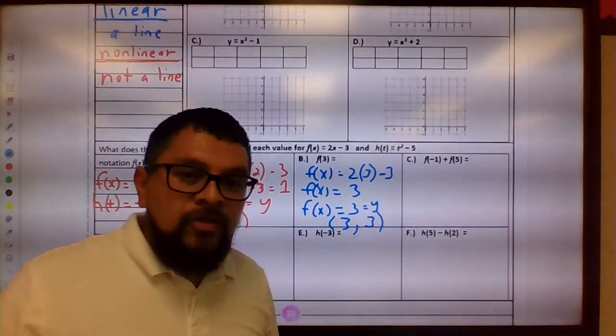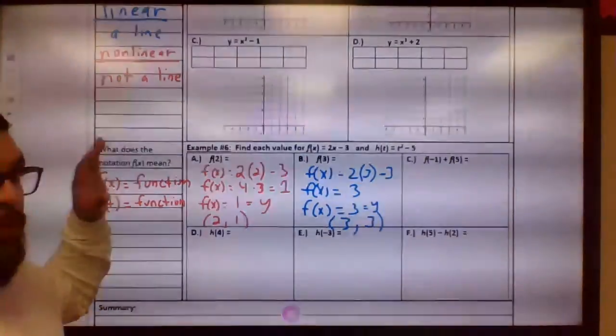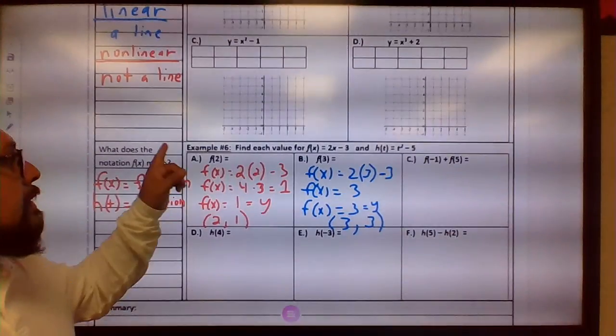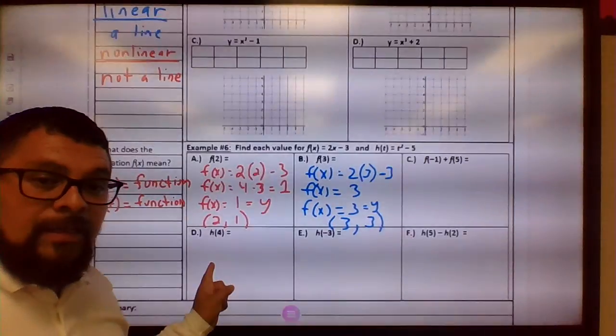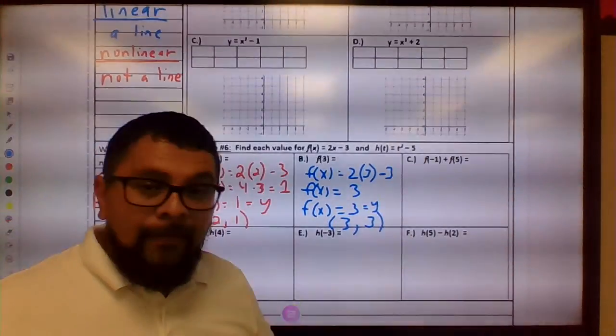Hi class, this is Mr. G, so we're continuing on and finishing 1.7. We are in example 6, we're going to go ahead and do C, and I'm going to start you off on D, and you guys are going to do E and F.